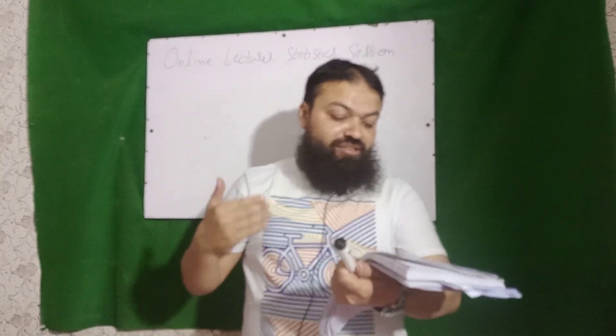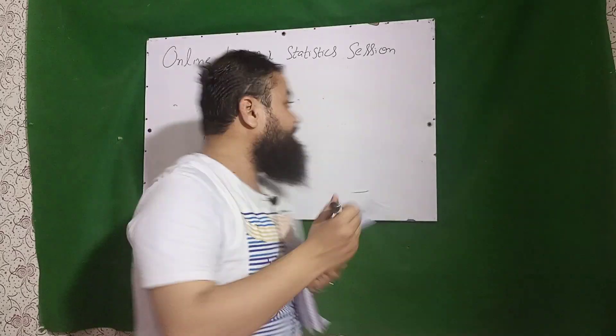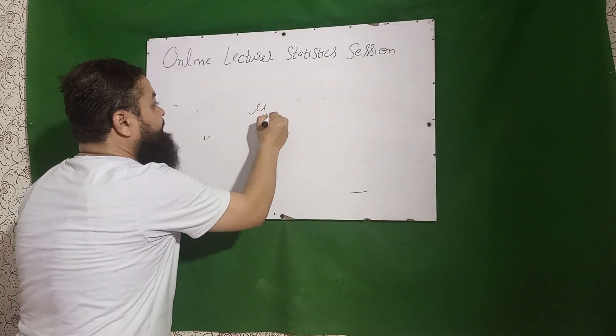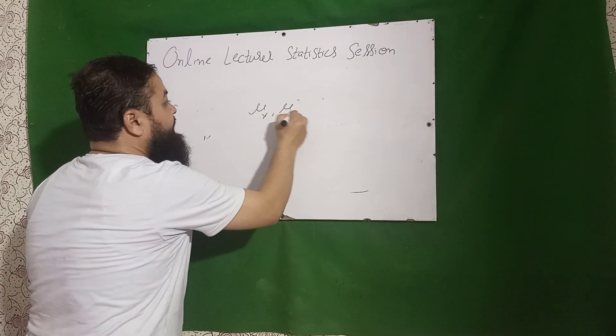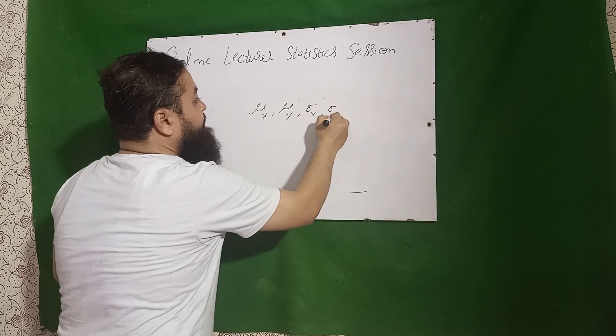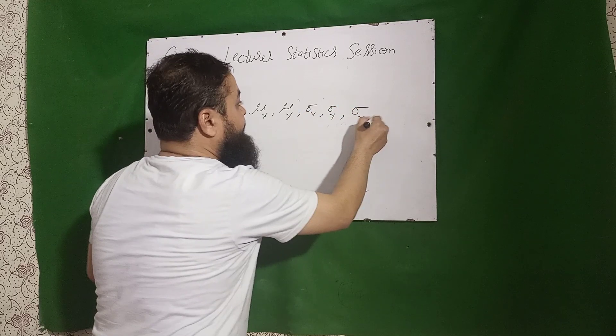Next question: bivariate normal distribution has how many parameters? It has five parameters: mu of X, mu of Y, sigma X, sigma Y, and sigma XY.